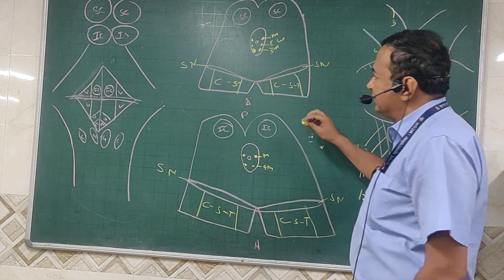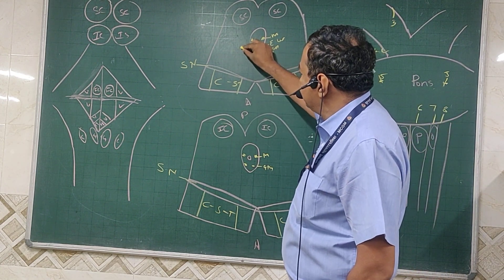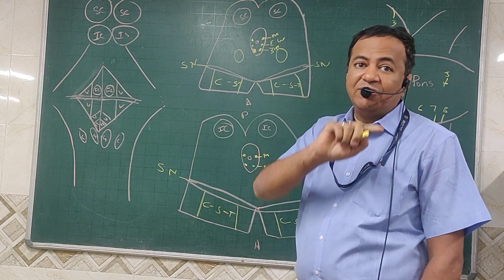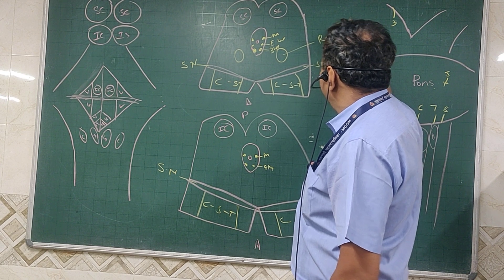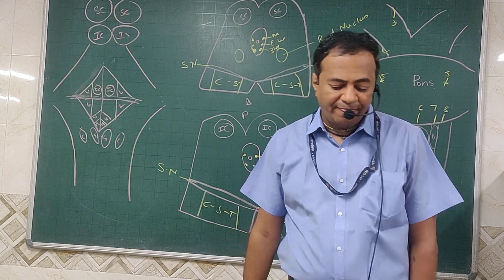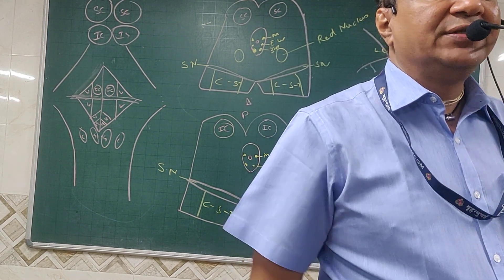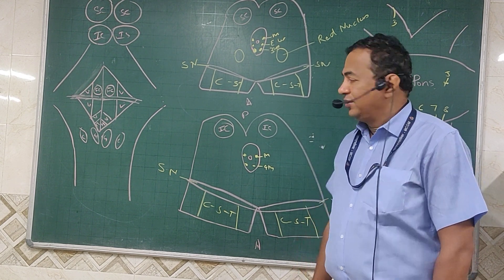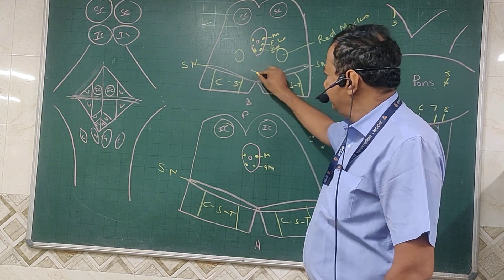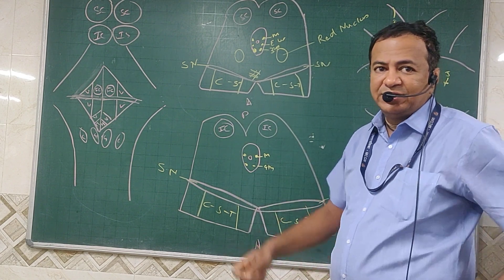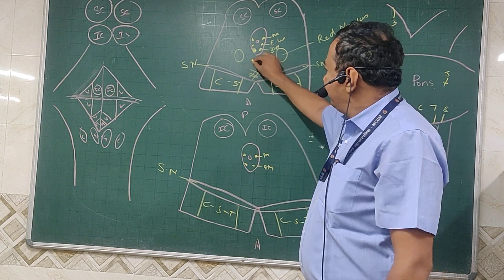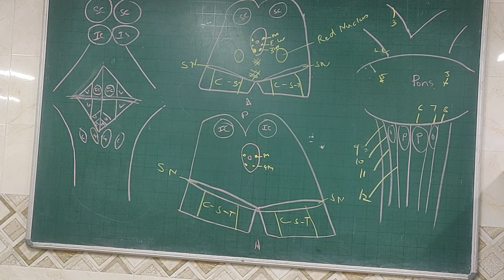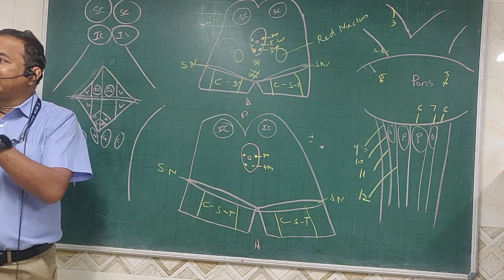There is one nucleus seen at the level of superior colliculus but not at the level of inferior colliculus, and that is called the red nucleus. The rubrospinal tract starts from the red nucleus — it is an extrapyramidal tract. It crosses to the opposite side, so here we see the decussation of the rubrospinal tract. The posterior portion is called tectum. There is a tract which starts from the superior colliculus called the tectospinal tract, and we also see the decussation of the tectospinal tract here.